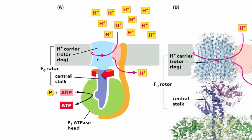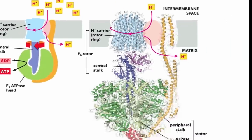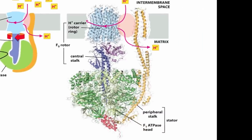As the central stalk rotates, caused by the movement of protons across the membrane, the kinetic energy generated by that rotation is imparted to the F1 ATPase head, catalyzing the reaction of ADP and inorganic phosphate to create an ATP molecule. Here on the right, we have ribbon images of the same protein, showing the F0 rotor, the central stalk, and the F1 ATPase head.